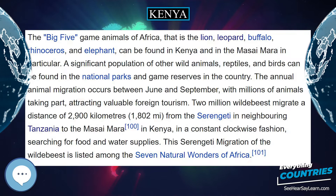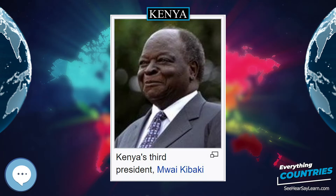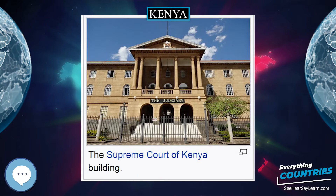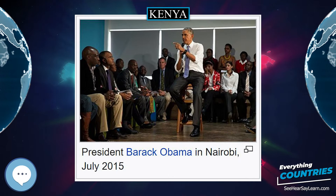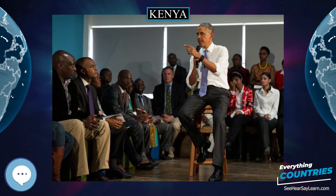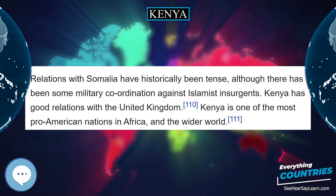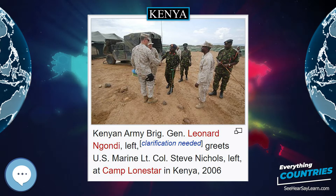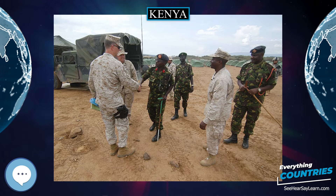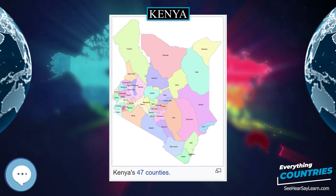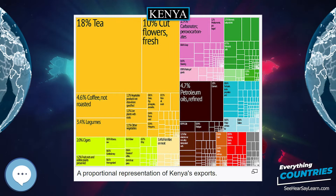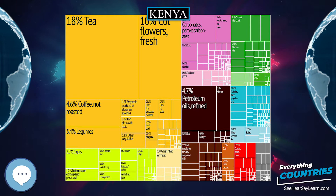Kenya has close ties with its fellow Swahili-speaking neighbors in the African Great Lakes region. Relations with Uganda and Tanzania are generally strong as the three nations work toward economic and social integration through common membership in the East African Community. Relations with Somalia have historically been tense, although there has been some military coordination against Islamist insurgents. Kenya has good relations with the United Kingdom. Kenya is one of the most pro-American nations in Africa and the wider world. With International Criminal Court trial dates scheduled in 2013 for both President Kenyatta and Deputy President William Ruto related to the 2007 election aftermath, U.S. President Barack Obama chose not to visit the country during his mid-2013 African trip. In July 2015, Obama visited Kenya, becoming the first American president to visit the country while in office.